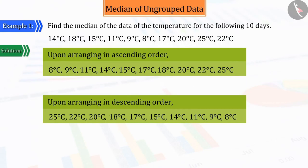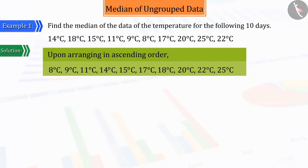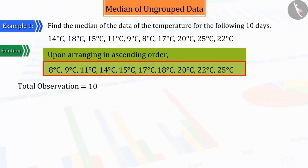Then we assess the observations and find whether they are even or odd. As you can see, the total number of observations given is ten, which is even.